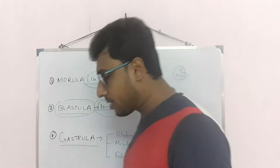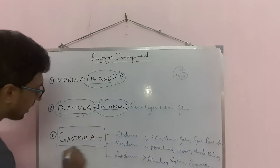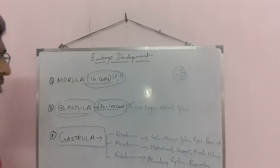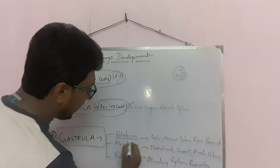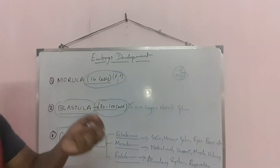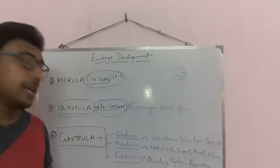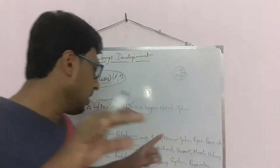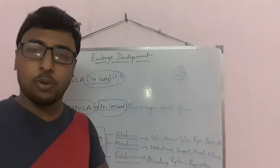The third and final stage of cleavage is gastrula, which is very important in human embryo development. After blastula, gastrula forms. In gastrula, there are more cells than in blastula, and crucially there is formation of three main layers. Going from outside inward: ectoderm on the outside, mesoderm in the middle, and endoderm on the inner side.